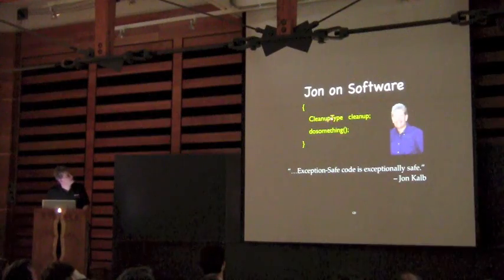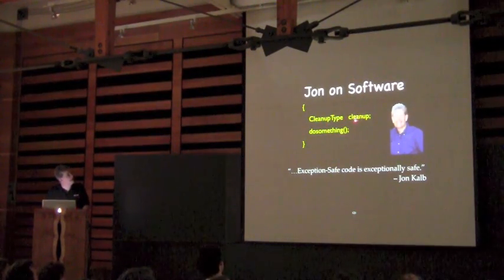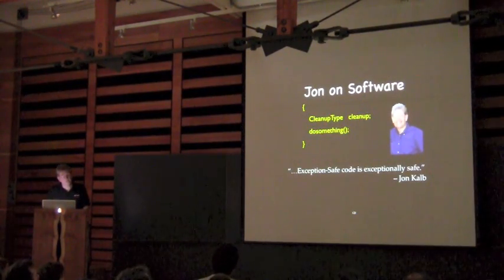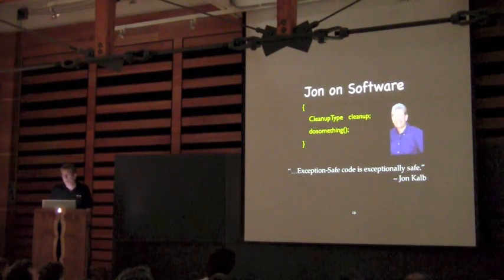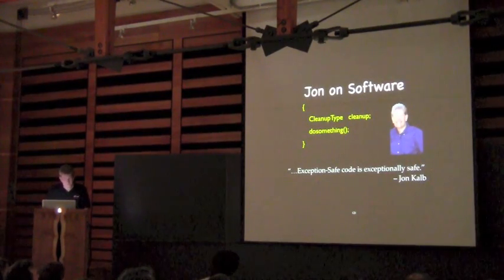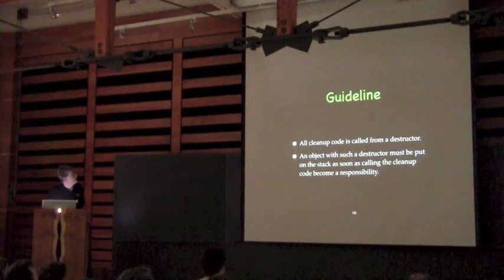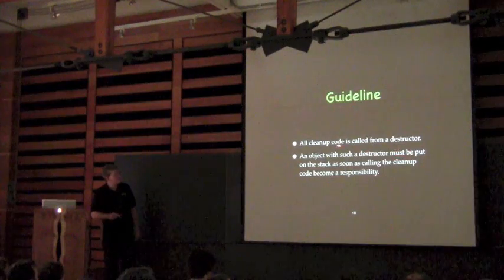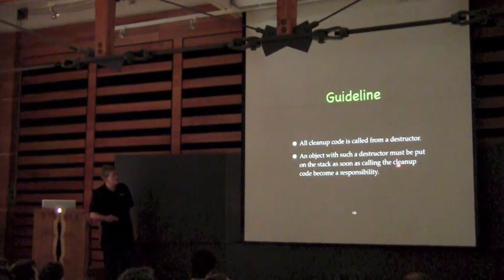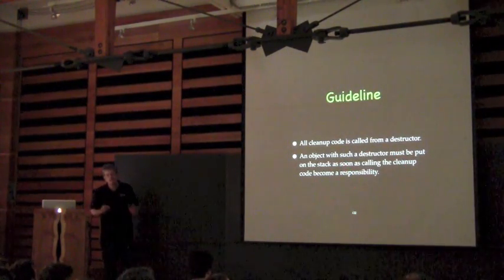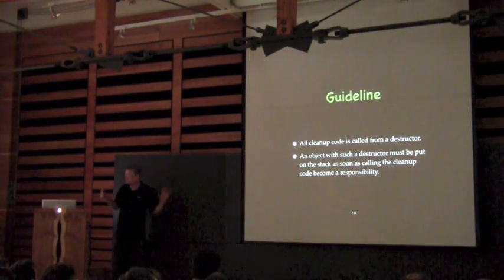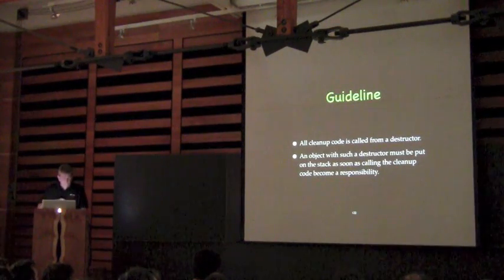Let's fix it. Create a cleanup type that does the cleanup in its destructor. Put that on the stack, then do something. If do something returns normally, we clean up. And if it returns with an exception, we clean up. Exception-safe code is exceptionally safe. Our guideline: all cleanup code is called from a destructor. An object with such a destructor must be put on the stack as soon as calling the cleanup code becomes a responsibility.